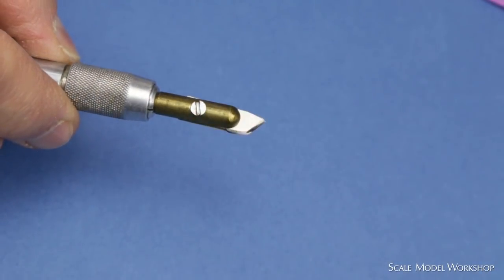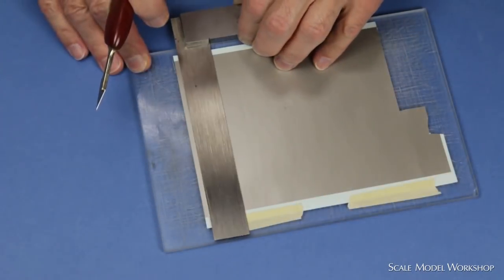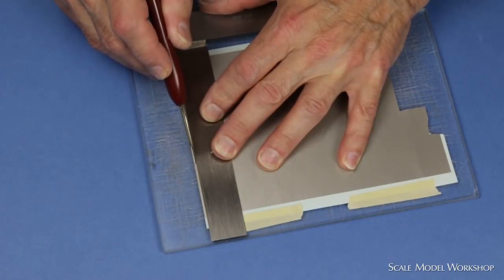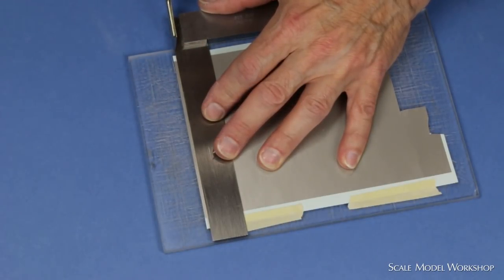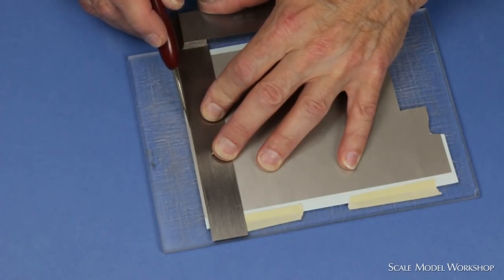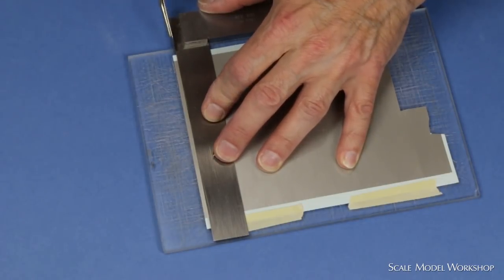A strip cutter can be used when a large amount of striping is necessary, or a square can be used when you just need a single length. Note that only the center section here will be used.